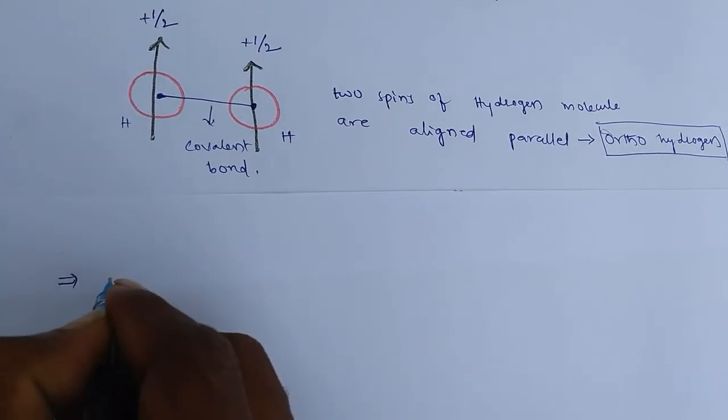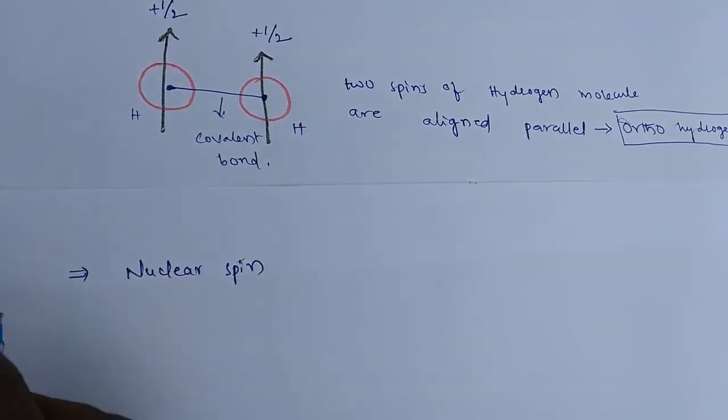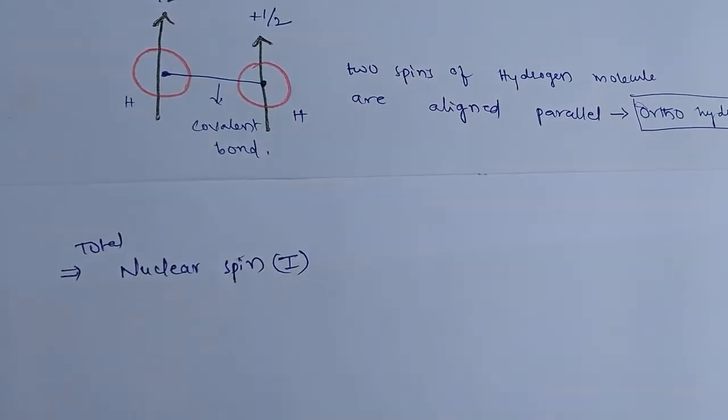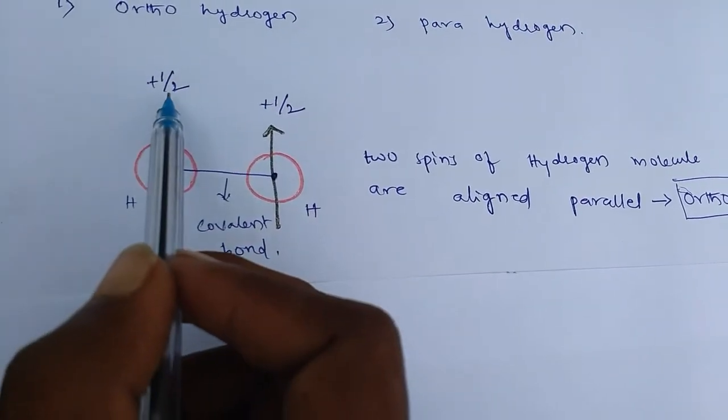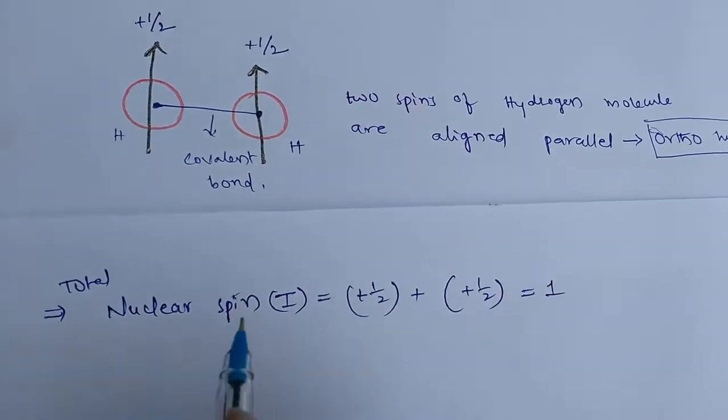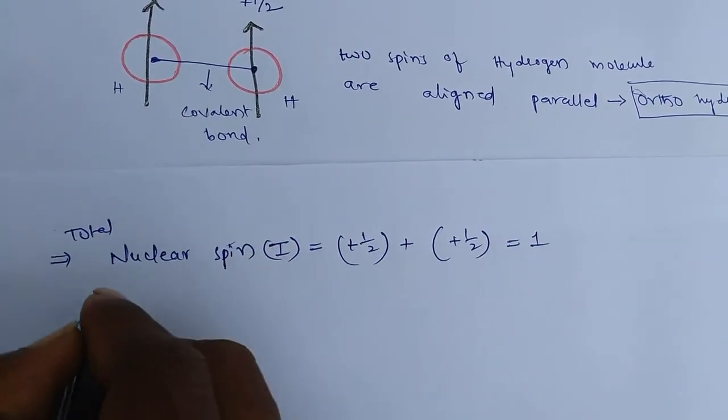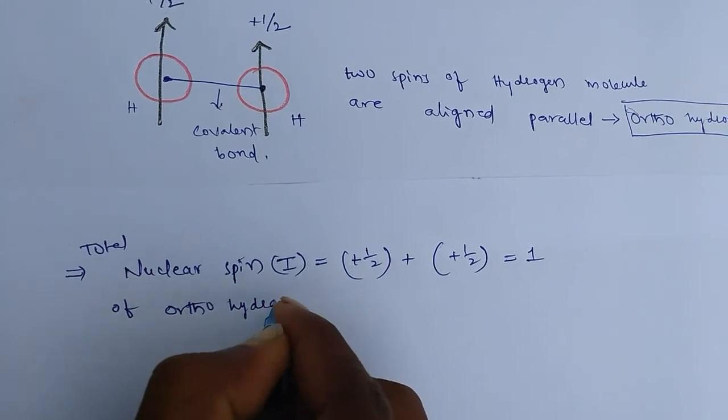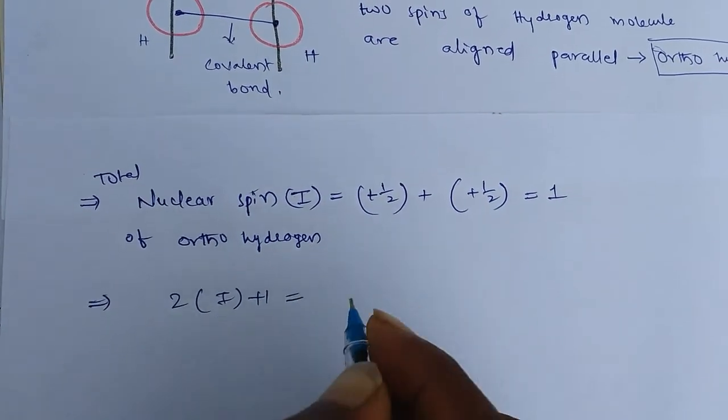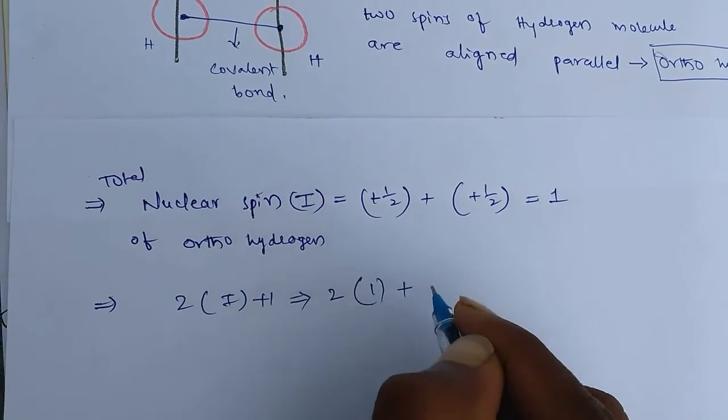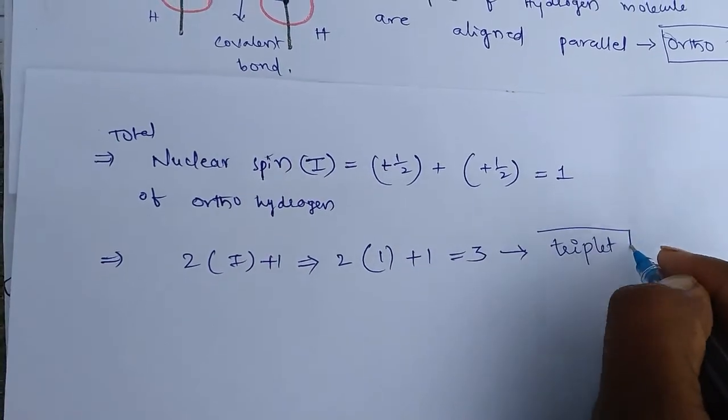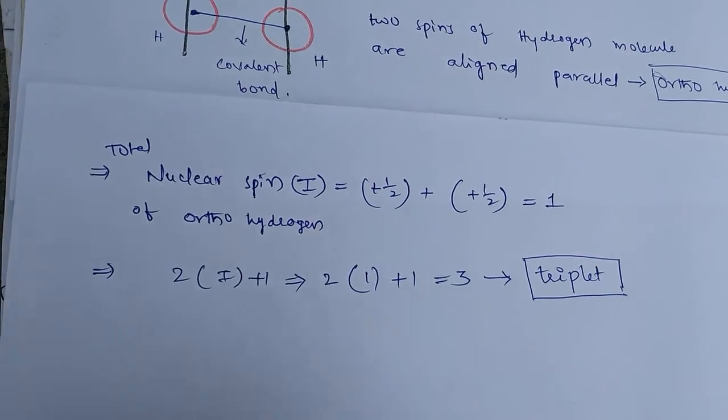Now, nucleus spin. So here, total nuclear spin I equals to plus half plus plus half equals 1. The total nuclear spin of ortho-hydrogen is 1. So if you apply 2I plus 1, you can get 3. So that means it is triplet in state.